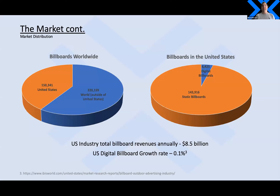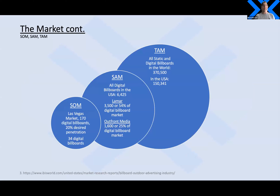The billboard industry is an $8.5 billion industry, but it has a very small growth rate of only 0.1%. The reason is that many billboard advertisers are moving to digital billboards — moving away from static — but they're not putting up new billboards per se. For our SOM, we're targeting the Las Vegas market, which has 170 digital billboards. We want to penetrate this market at about 20%, which would give us 34 digital billboards on our platform.